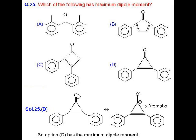In other compounds like option A, there is simple dipole moment with no component of additional aromaticity. In B, the central ring will become anti-aromatic if it shows resonance in the C double bond O group.